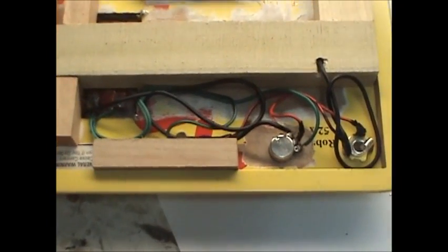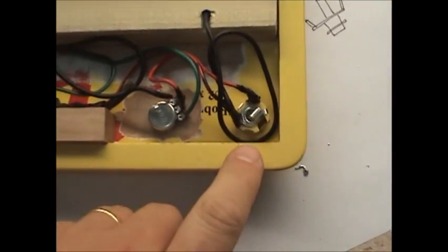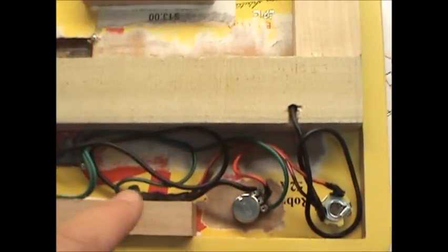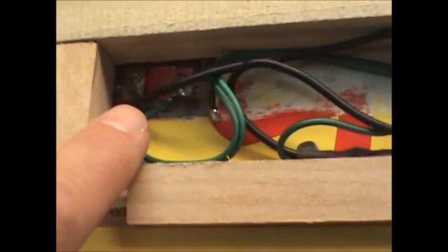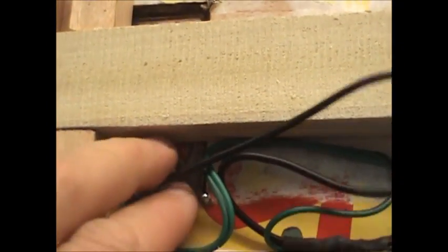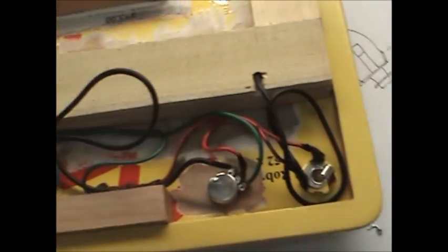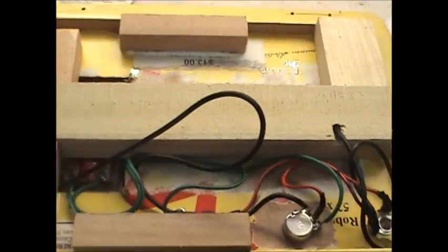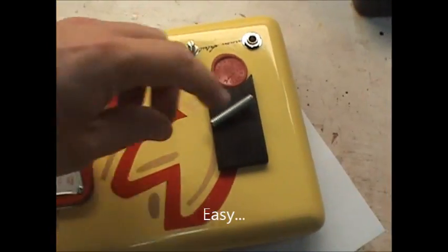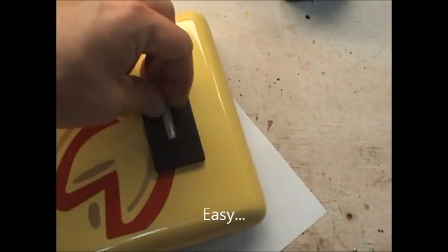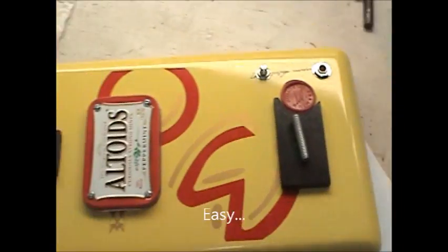And that's the finished wiring job. We got our jack, volume, ground for the bridge, got our pickup in here with a ground to the cover, and the cover will go on. The back cover will go on, and this will twist for intonation.